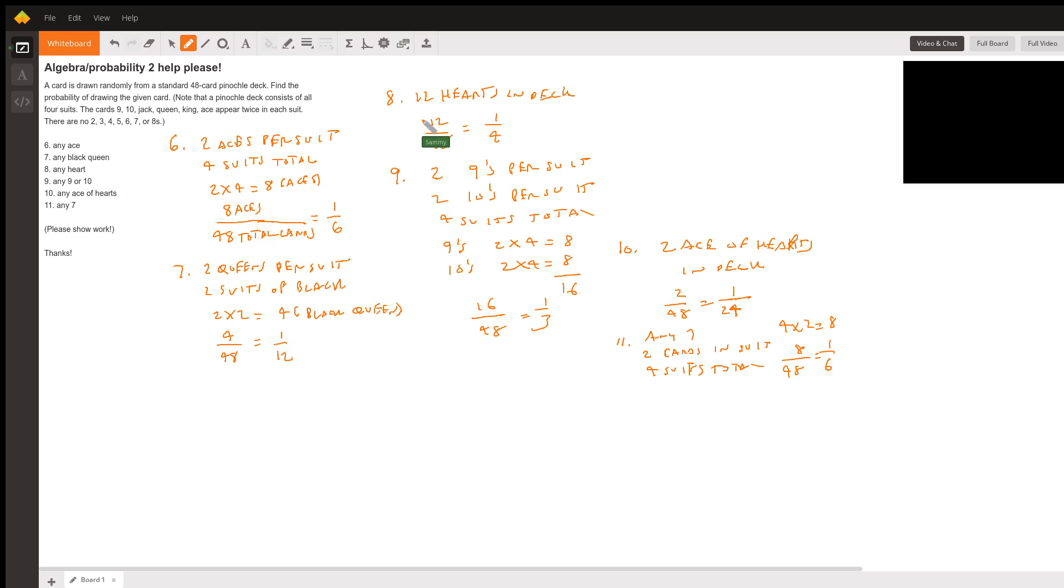Eight is any heart. There are 12 hearts in a deck, so 12 divided by 48 is one-quarter, one-fourth. That would be number eight.